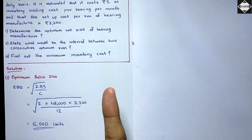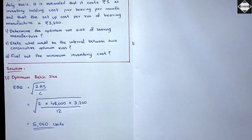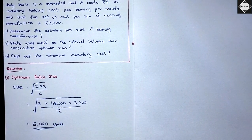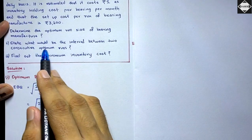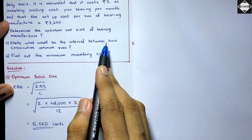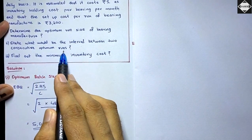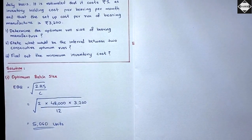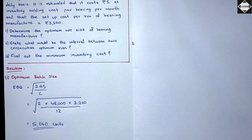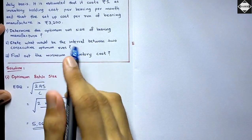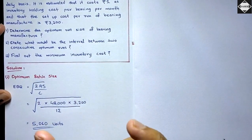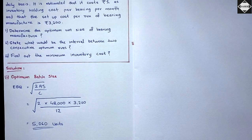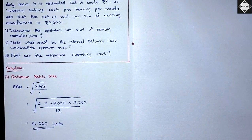At this batch size, the setup cost and the carrying cost will be minimum. The second question asks: what would be the interval between two consecutive optimum runs? Runs means batches, so they are asking for the period — the gap — between two continuous batches.